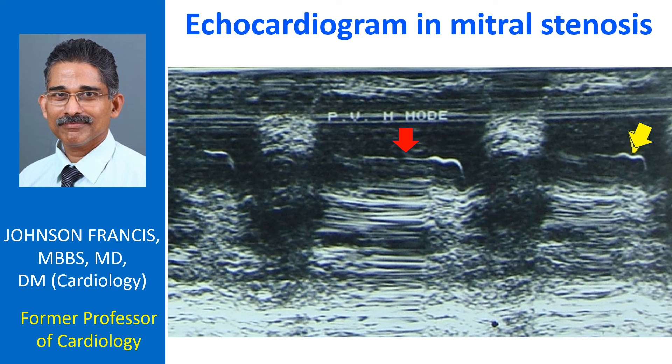When Doppler echo was not available, M-mode of the pulmonary valve was an important tool to assess pulmonary hypertension. Now with Doppler echo, the right ventricular systolic pressure and indirectly the pulmonary artery systolic pressure — in the absence of pulmonary stenosis — can be estimated from the velocity of the tricuspid regurgitation jet.